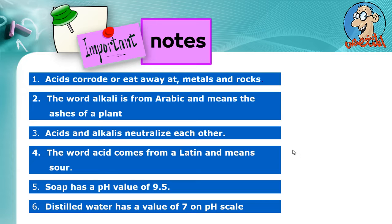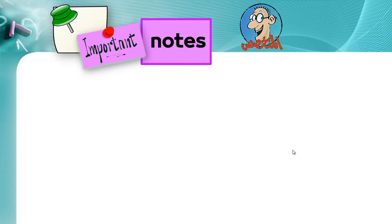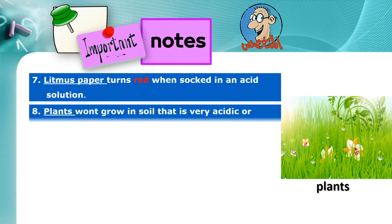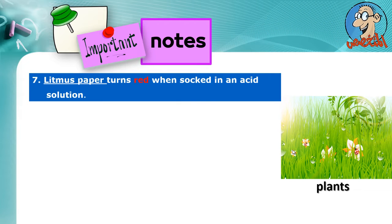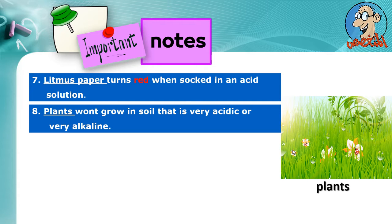Soap has a pH value of 9.5. Distilled water has a value of 7 on the pH scale. Number 3: Litmus paper turns red when soaked in an acid solution. Number 4: Plants won't grow in soil that is very acidic or very alkaline.